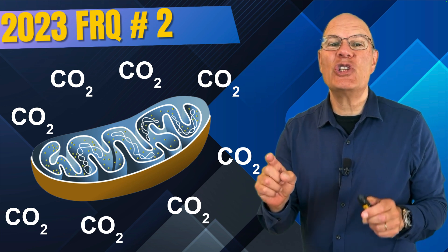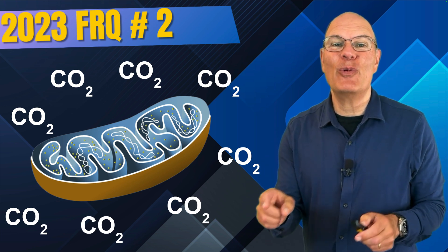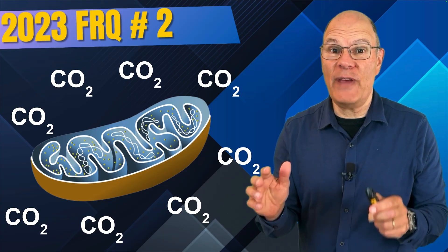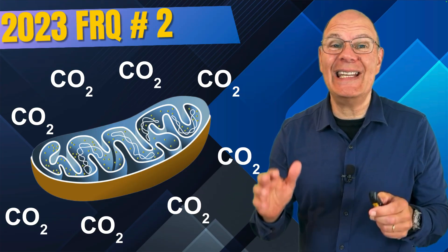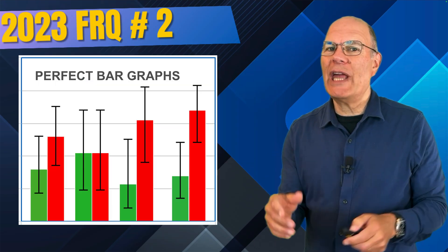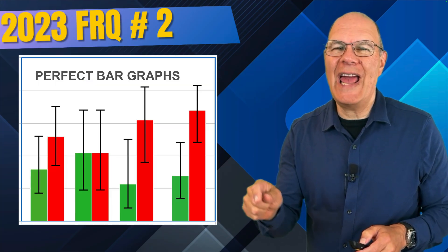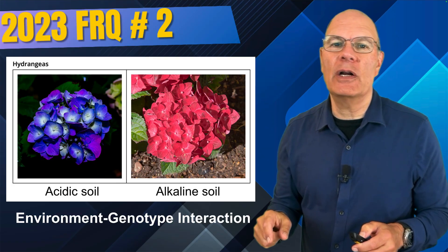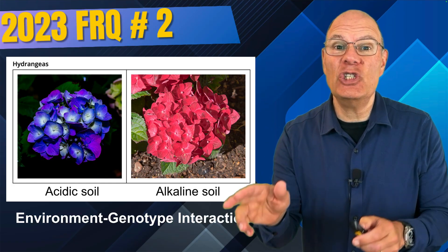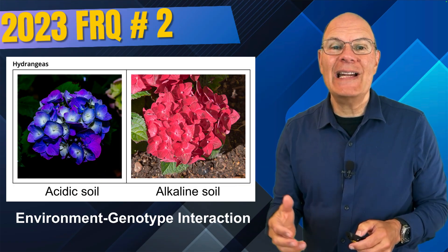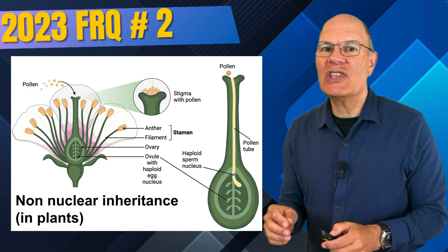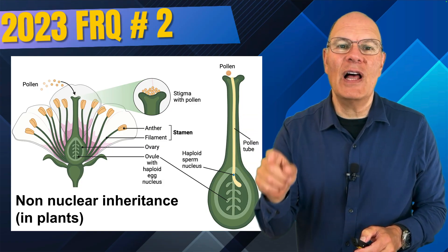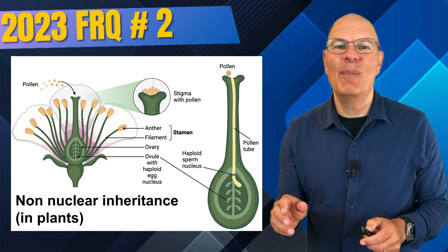In this video, based on question two from the 2023 AP Bio Exam, we'll start by looking at how differing CO2 levels affect mitochondrial density in plant cells. Then we'll look at a data set provided by the College Board and graph that data into a bar chart including error bars. We'll look at environment-genotype interaction and how it affects phenotype, and then connect with non-nuclear inheritance in plants.